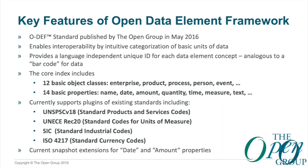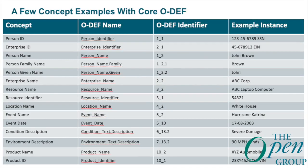Current snapshots have extensions for the concept of date — things like birth date, delivery date, production date — and for amount: cost amount, price amount, tax amount. There's no limit to other extensions either. Just using that core set of ODEF objects and properties, you can get concepts like person identifier, enterprise identifier, person family name, person given name, and so forth. The unique ID means that no matter what language you're in, the concept of enterprise ID would have '2_1' across all languages.